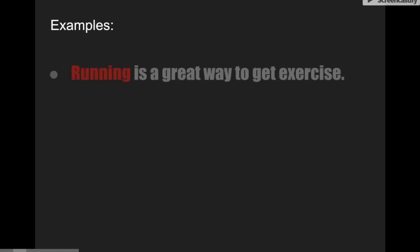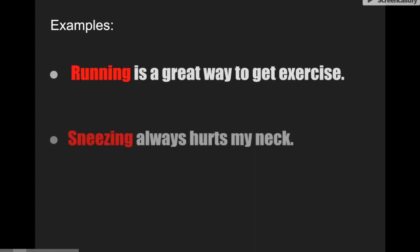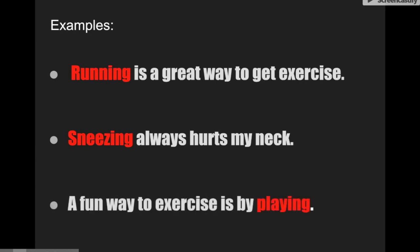Some examples. 'Running is a great way to get exercise.' In this case, 'running' is being used as a noun. 'Sneezing always hurts my neck.' That's fact — and it's the 'ing' form of a verb being used as a noun. 'A fun way to exercise is by playing.' 'Playing' there becomes a noun, as a thing that you can do, just taking the 'ing' form of the verb 'play.'